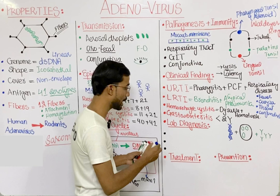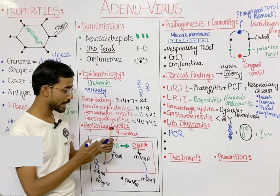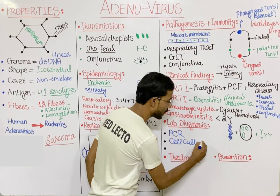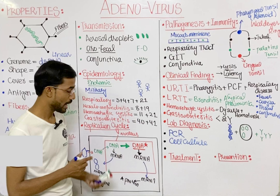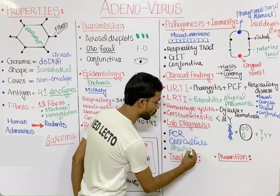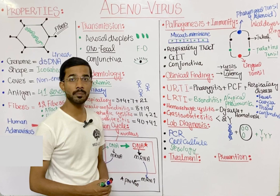For lab diagnosis, the first method is PCR, through which we can detect adenovirus. The second is cell culture, since replication of viruses happens inside cells. We can also do serology tests to detect antibodies in the patient. There is no antiviral treatment in the case of adenovirus.